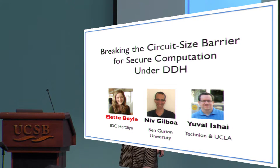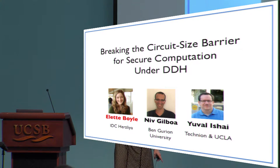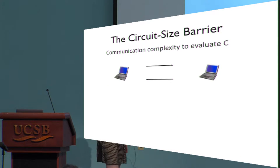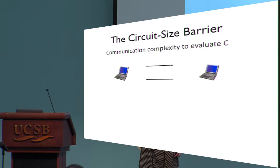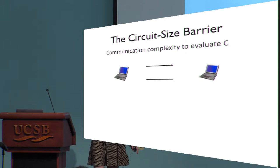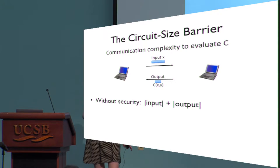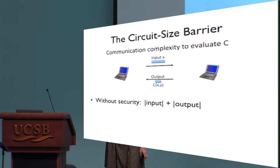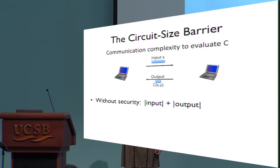This is joint work with Liv Gilboa and Yuval Ishai, and the focus is on what's referred to as the circuit size barrier. Suppose I have Alice and Bob with some inputs and want to compute some circuit C. If we don't care about security, the communication required is very minimal — I can just send my input over, computation will be performed, and the output sent back.